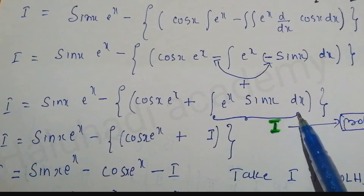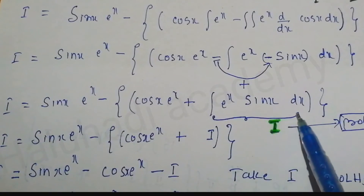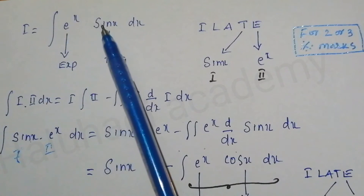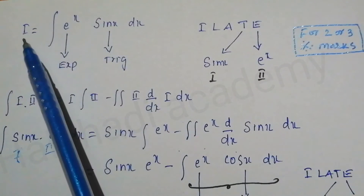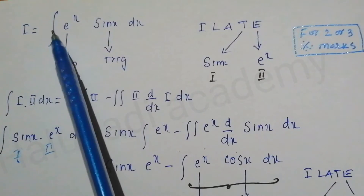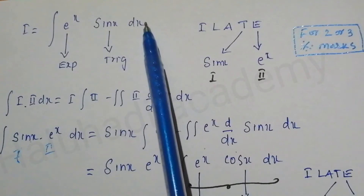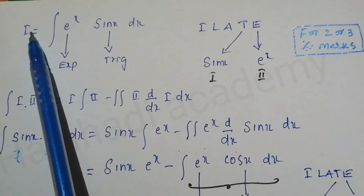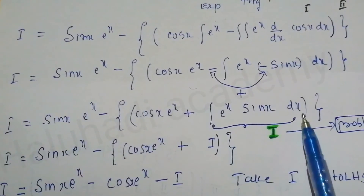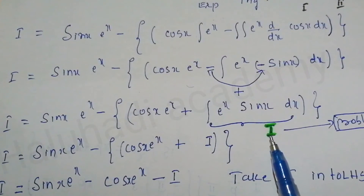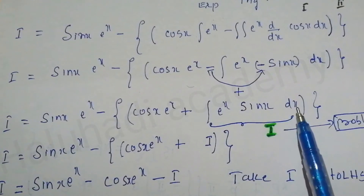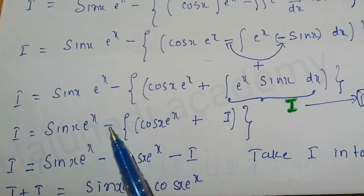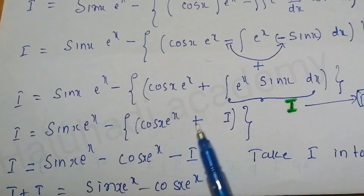Observe that the integral of e^x sin x dx appearing on the right-hand side is the same as the original given problem. Since we defined i = integral of e^x sin x dx, we can substitute it as i. So we have: i = sin x · e^x minus cos x · e^x plus i.